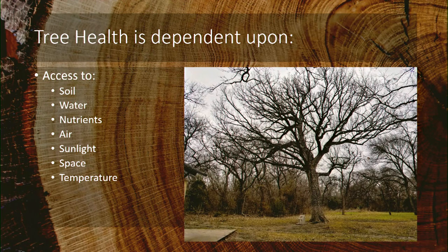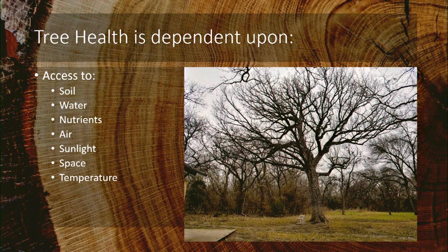Tree health is dependent on several factors. These organisms need access to good soil — soil that the plants are adapted to — as well as sufficient water, not too much and not too little, and a proper amount of nutrients. In many cases our trees may not be able to access nutrients in the soil because of the pH; they're not adapted to our soil pH and therefore cannot extract nutrients from it.